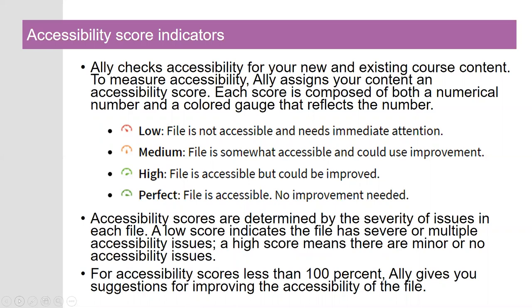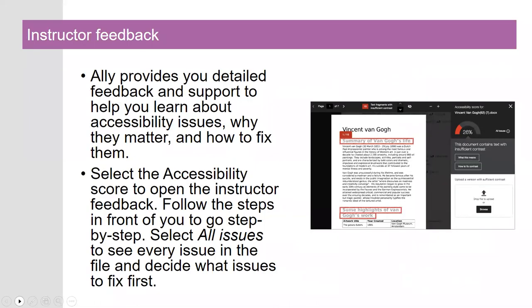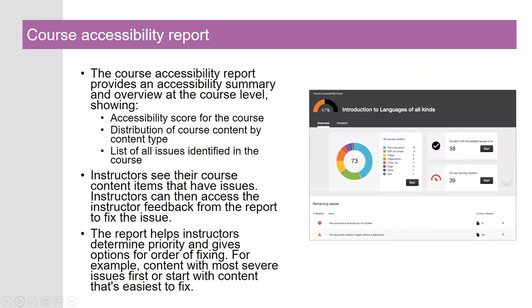Moving on to the next way that Ally helps instructors improve accessibility: in addition to file-level information, Ally provides a course accessibility report. This gives an accessibility summary at the course level, showing an accessibility score for the entire course, a distribution of course content by content type, and a list of all issues identified in the course. The report helps instructors determine priority and gives options for order of fixing — for example, content with the most severe issues first, or starting with the content that's easiest to fix.